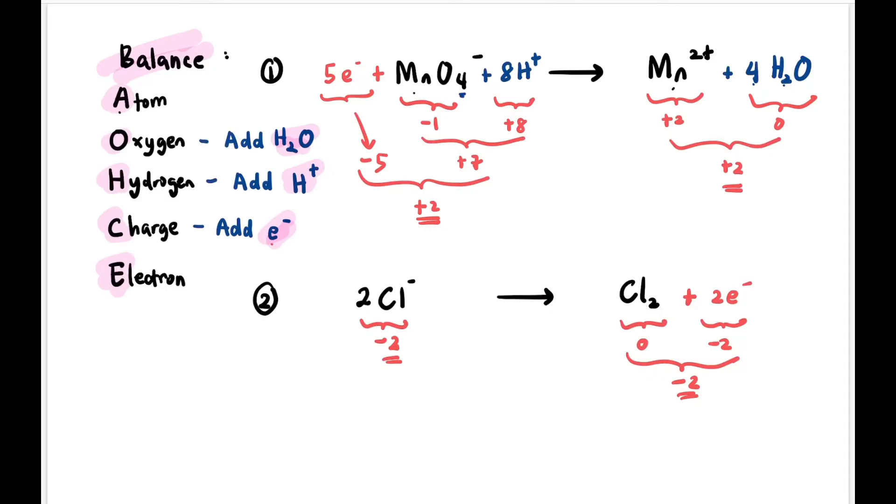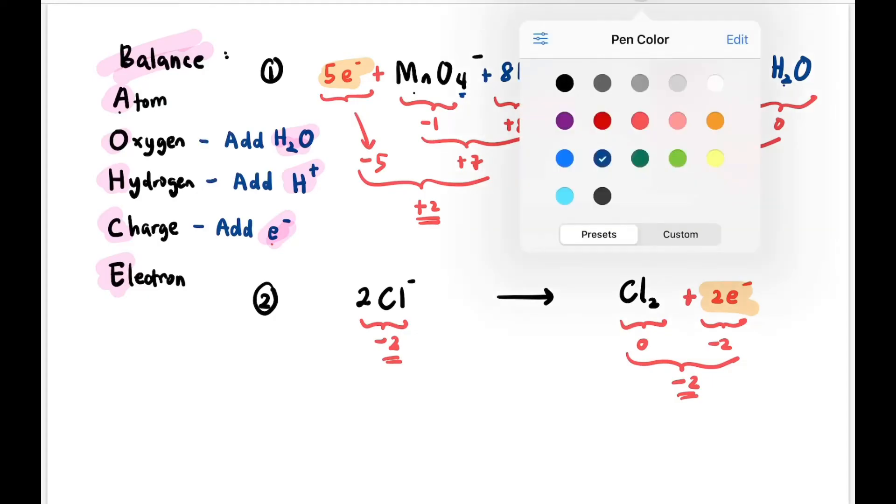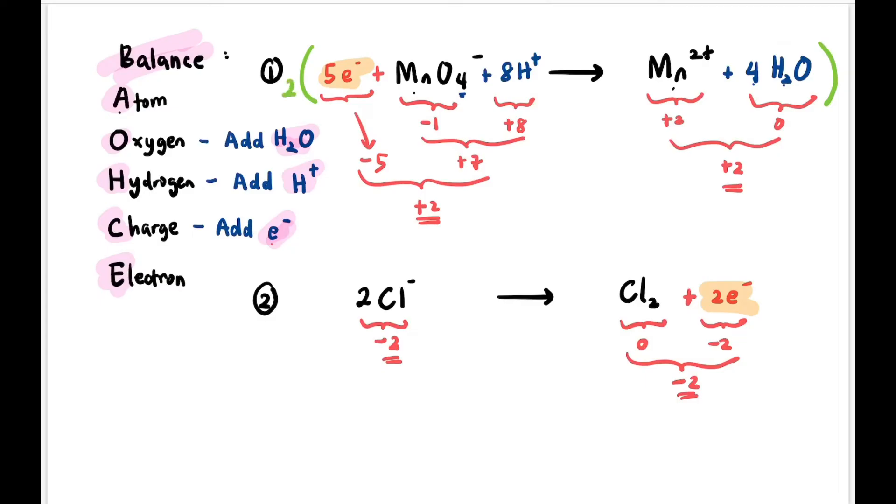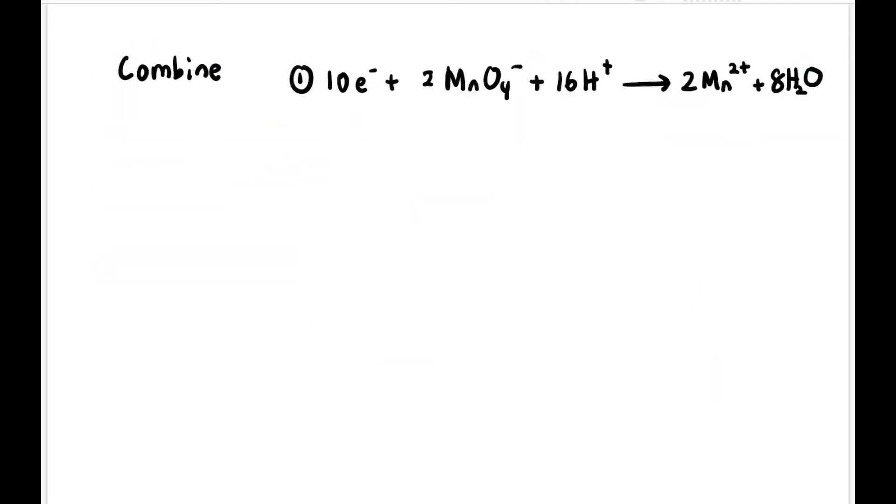Now we have to check the electrons. In the first equation there are 5 electrons. In the second equation there are 2 electrons. So we have to make the electrons equal. How? First equation we multiply by 2. Second equation we multiply by 5.